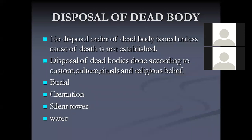Silent tower: a Parsi sect disposes of their dead body by means of the silent tower, a religious building. The body is placed on top of the building where vultures come and tear the body apart. Some dispose of their dead bodies in water. These are the four methods of disposal of the dead body.